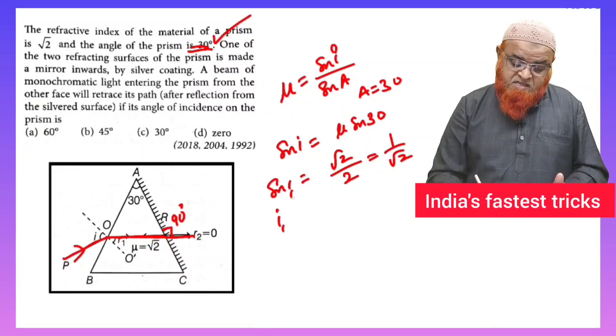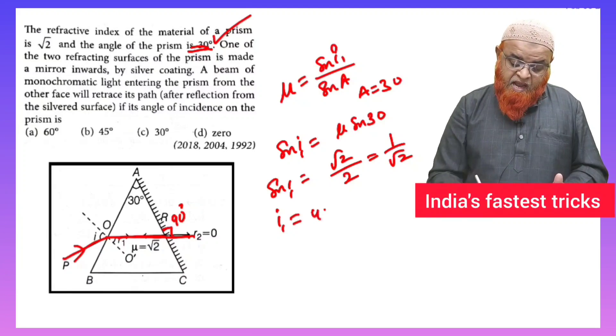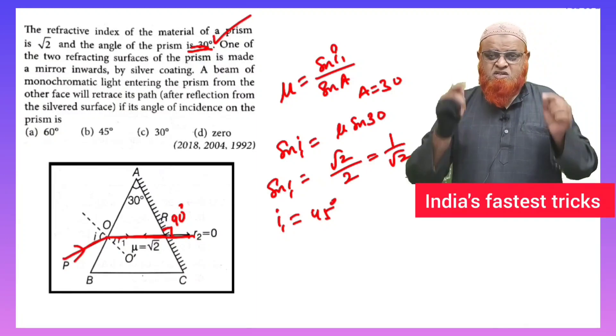So therefore you can write i₁, where i₁ is taken as directly 45 degrees. Hope you have enjoyed this short trick.